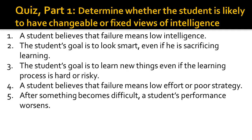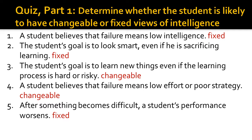Now let's look at the answers. For number one, the answer is fixed because a student with an incremental view of intelligence would believe that failure means they didn't try hard enough, didn't use the correct strategies, or simply didn't have the necessary knowledge. Number two is fixed because a student with a changeable view would not sacrifice learning — instead, he would do what was necessary to learn the material and develop his competence. Number three is changeable because a student with a fixed view of intelligence would not risk learning something hard if she did not believe she had the intelligence to succeed. Because if she failed, others might think she's not intelligent — so why take the risk? It's better to play it safe and not try things that might be hard to learn.